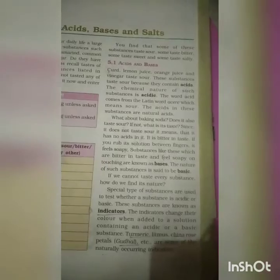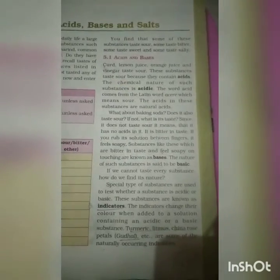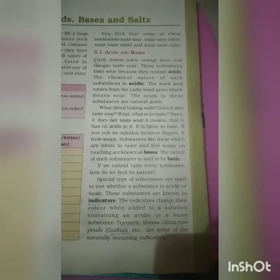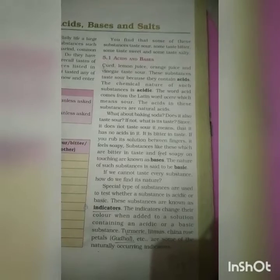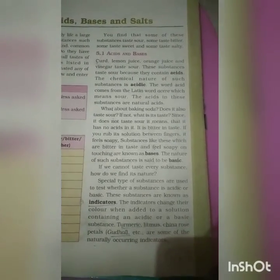Our next topic is indicators. What are indicators? An indicator is a substance that is used to test whether a substance is acidic or basic. The indicators indicate the presence of an acid or base in a substance by changing their color.